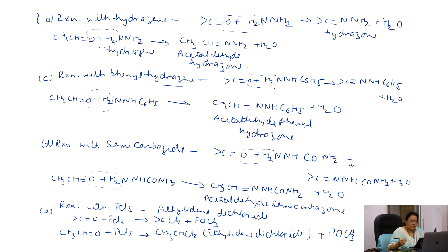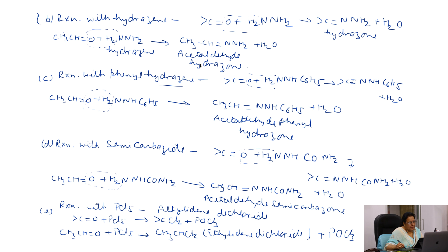The next substitution reaction is reaction with hydrazine. Hydrazine is NH2-NH2. When the carbonyl group reacts with NH2-NH2, one water molecule is eliminated and we get a hydrazone. Similarly, acetaldehyde reacts with hydrazine; one water molecule is eliminated and we get acetaldehyde hydrazone.